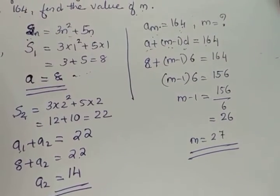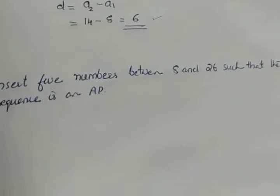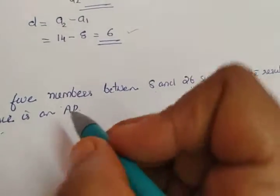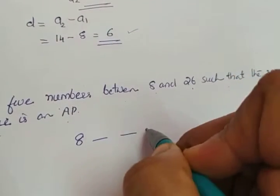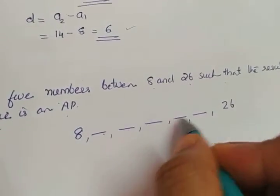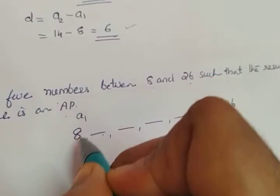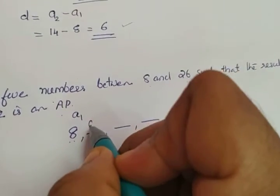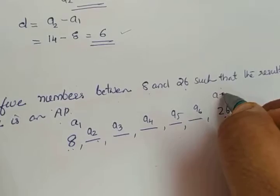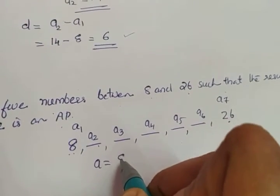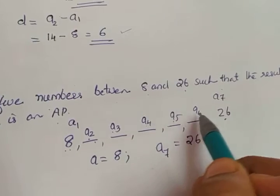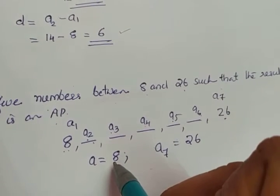Moving to the next question: insert five numbers between 8 and 26 such that the resulting sequence is an AP. So 8 is the first term, we insert five terms, and 26 is the seventh term. Therefore a = 8 and a7 = 26. We need to find a2, a3, a4, a5, and a6, which requires a and d.